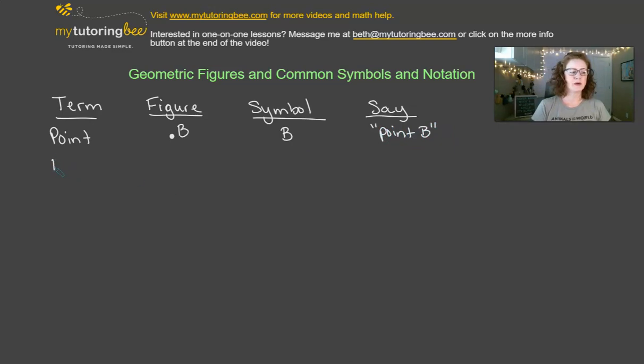The next thing that we're going to talk about is a line, and the figure for that is a line with two arrows on each side. Typically, a line will have some amount of points labeled, such as this one will have A and C labeled, and so for our symbol, we would need to take two of those points and label it with the arrow symbol, the line with the arrows up on top.